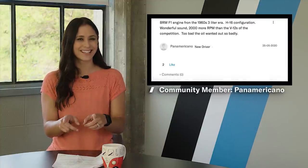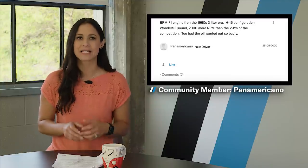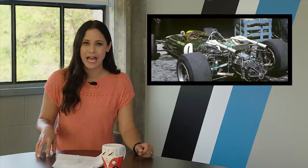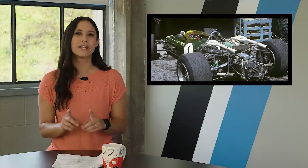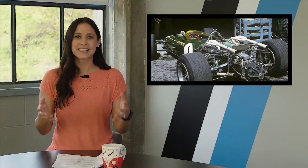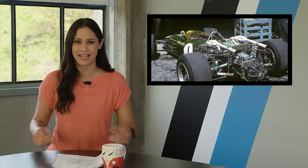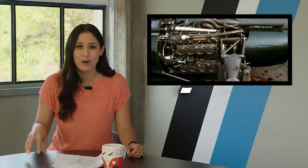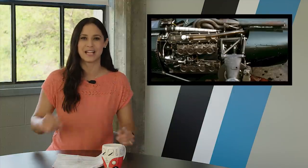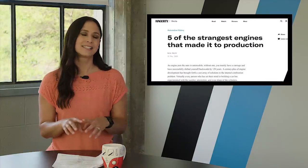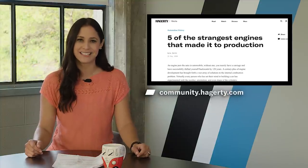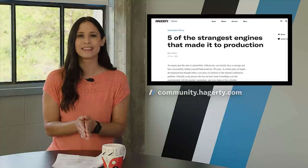But we're not done yet. Our Hagerty community members had even more gems. For example, Pan Americano brought up the BRM H16, an F1 engine with 16 opposed cylinders. You guys, that's like four Subaru engines bolted together. It also needed four sets of headers. Just look at how big it is inside of that Lotus. Now to see the full list of strange engines and the comments, head over to community.hagerty.com or hit the link below.